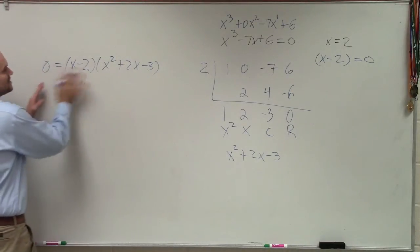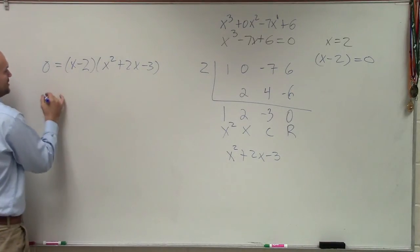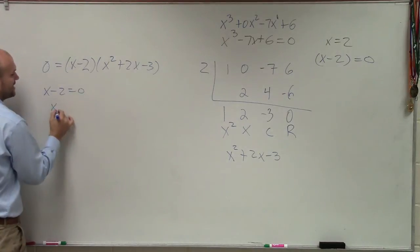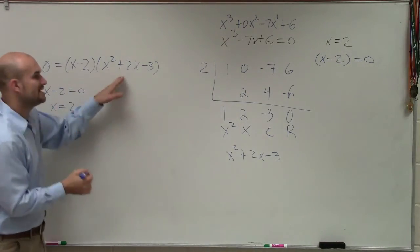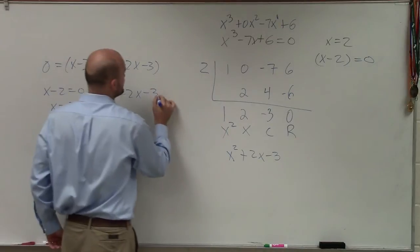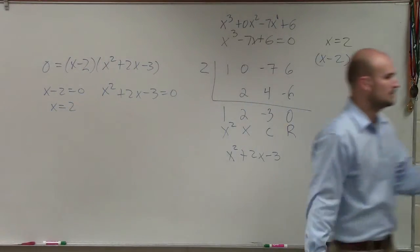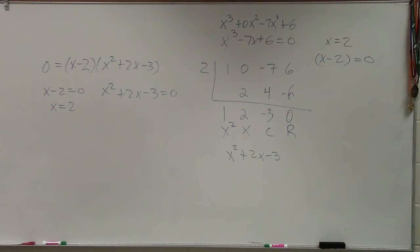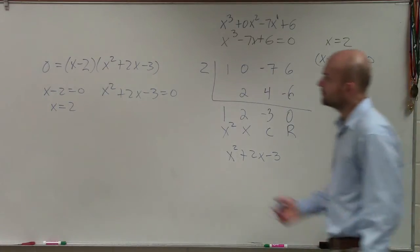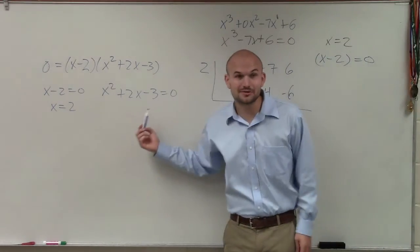Well, ladies and gentlemen, once we have this as a product, we know that x minus 2 equals 0, which gave us x equals 2. But now we can write x squared plus 2x minus 3 equals 0.